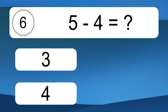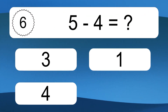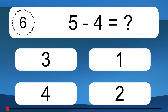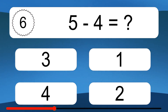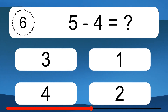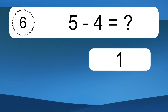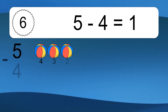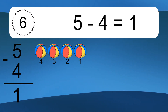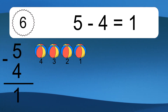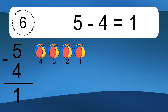5 minus 4 equals what? 5 minus 4 equals 1. Let's count it. 4, 3, 2, 1.